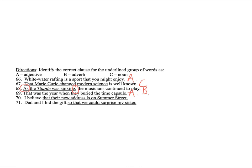I believe that their new address is on Summer Street. I believe what? What do I believe? I believe that their new address is on Summer Street. That's direct object, so direct objects have to be nouns. Dad and I hid the gift so that we could surprise my sister. Why did we hide it? Or under what condition did we hide it? So that, there's your subordinating conjunction. So that, we could surprise my sister. And that's an adverb clause. So that we could surprise my sister describes hid. Describes the verb.